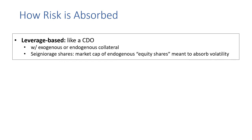How does this risk absorption work? One way is through a leverage-based mechanism, which works similarly to a collateralized debt obligation or CDO, where speculators are borrowing stablecoins into existence against risky collateral — as in DAI. This can happen with exogenous collateral, like in DAI, or endogenous collateral. It also includes a subcategory of senior shares, where a market cap of endogenous equity shares is meant to absorb the volatility.